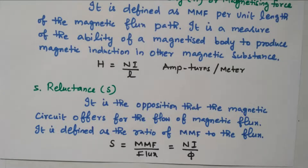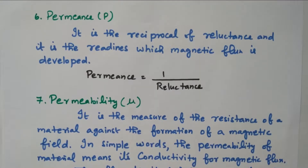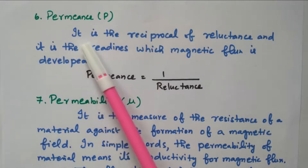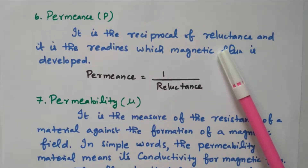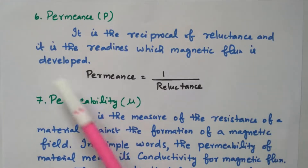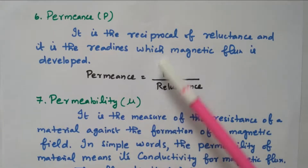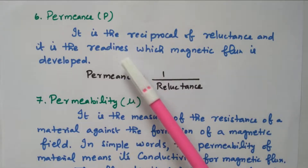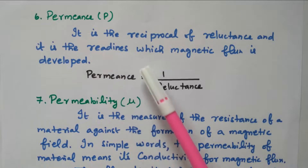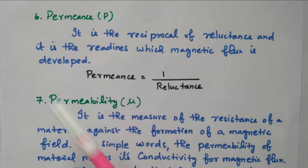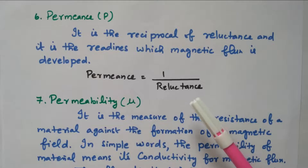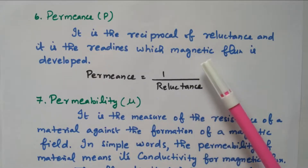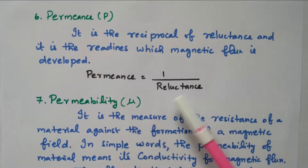Next is permeance. Permeance is the reciprocal of reluctance. While reluctance opposes the flow of flux, permeance represents the readiness with which magnetic flux is developed — it allows the magnetic circuit to produce magnetic flux. Permeance = 1 / Reluctance.